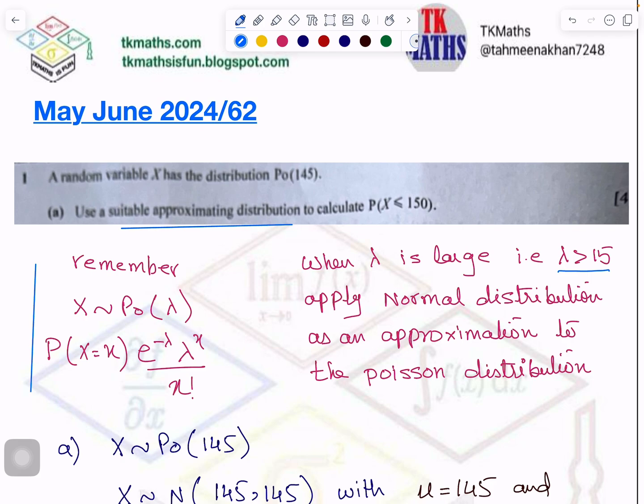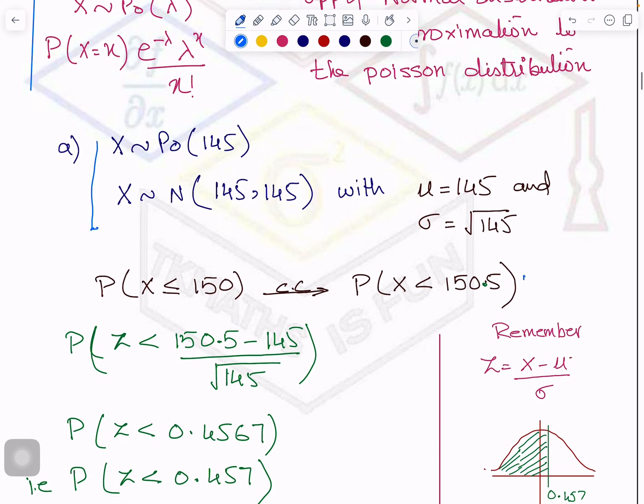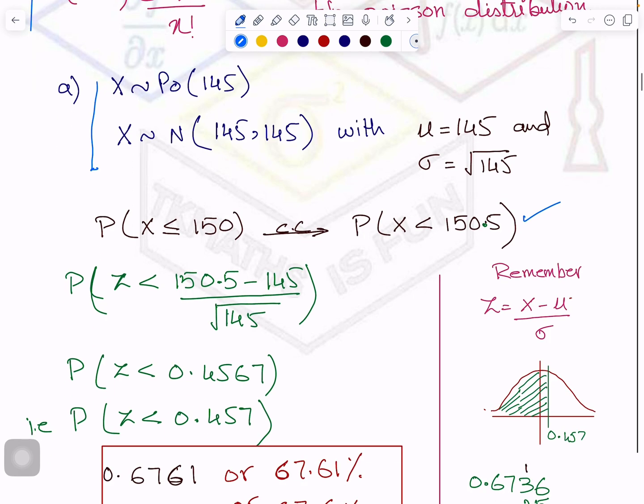We are using normal distribution as an approximation to the Poisson distribution. The condition is lambda is greater than 15, and then the distribution becomes this. Don't forget to apply the continuity correction, because Poisson is discrete data, and we are applying normal distribution, which is continuous data. When you apply continuity correction, it will become 150.5. After that, you will apply the standardized formula, which is z equals x minus mu divided by standard deviation.